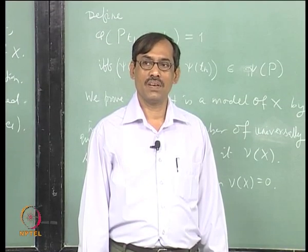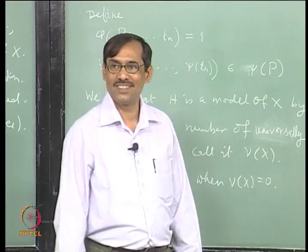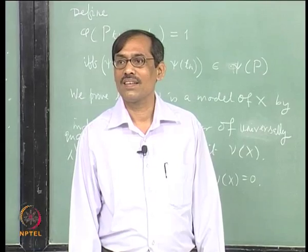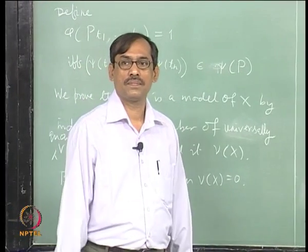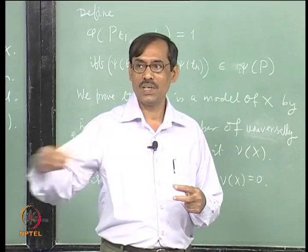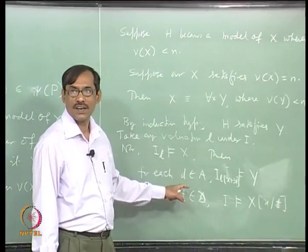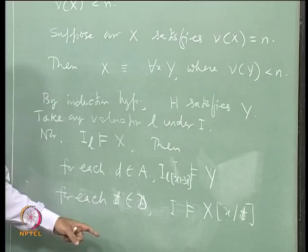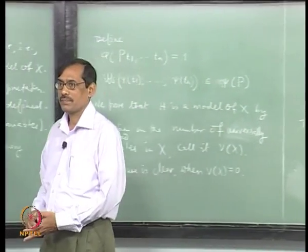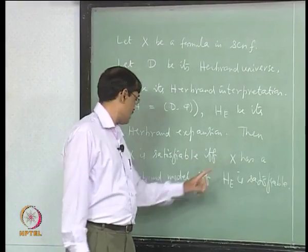We use a map mu from the Herbrand universe to the domain D, then take mu everywhere and work with that mu. Psi is doing that job. Once you realize this, there is no need of getting another mu. Psi is precisely doing that - it is taking all the terms in the Herbrand universe to the domain D. We are simply thinking of psi-inverse of D. All the psi-inverse images may not be singletons; they can be many, but then for each element it also satisfies. We have only proved one thing: X has a Herbrand model.